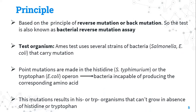The Ames test is based on the principle of reverse mutation, or back mutation, so the test is also called the bacterial reverse mutation test. Reverse mutation can be defined as the mutation that changes the mutant back to the wild-type allele or phenotype. Thus, the reverse mutation converts the aberrant state of the gene back to the normal wild-type state.